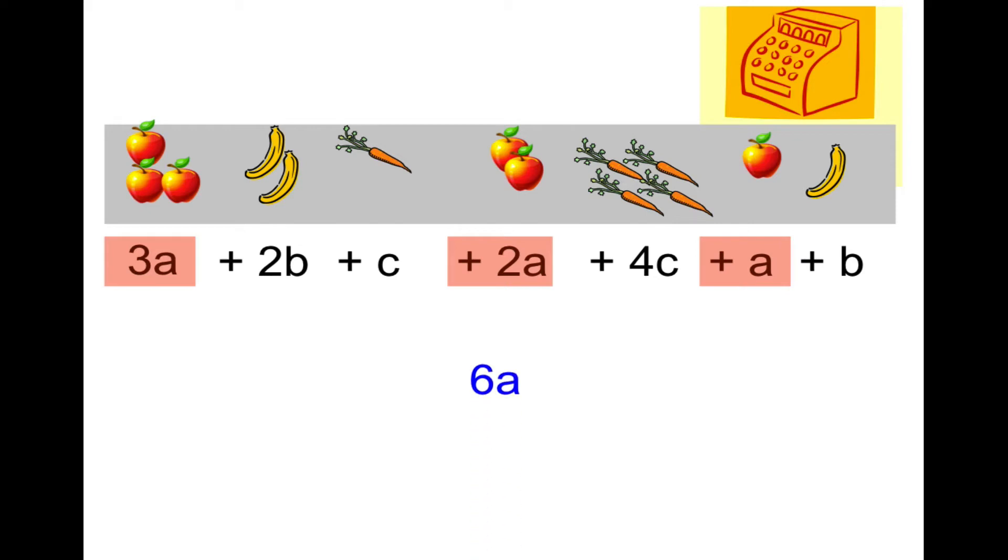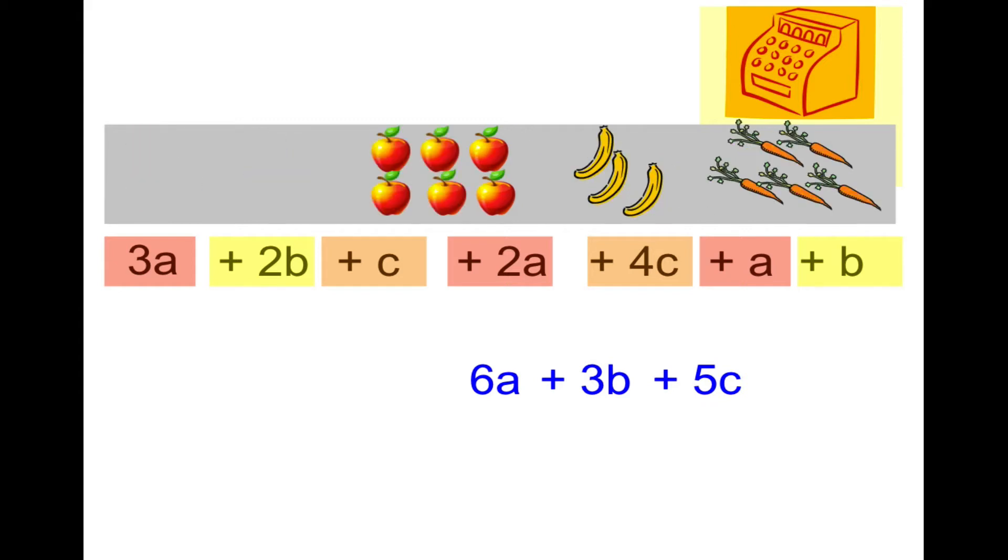For the b's, please notice that when I highlight, I'm highlighting the sign that comes in front of the term as well. That's plus 2b and plus one more b, so that's a positive 3b. Then positive 1c and positive 4c makes positive 5c. If we rearrange the fruit and vegetables, we've got 6 apples plus 3 bananas plus 5 carrots, and everybody's happy.